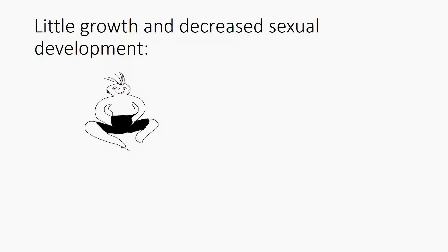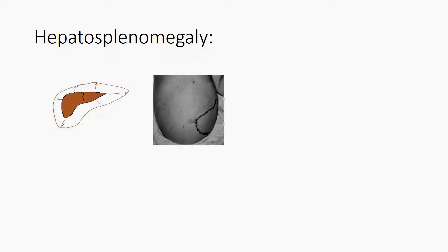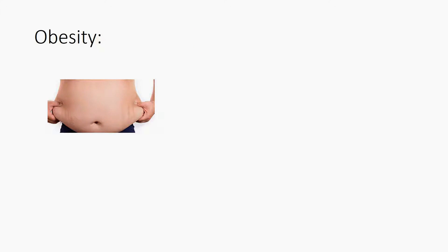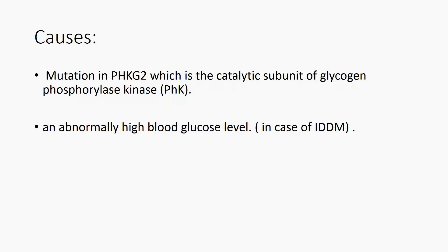Mauryak syndrome is a complex of different symptoms including little growth, hepatosplenomegaly, obesity, and decreased sexual development.